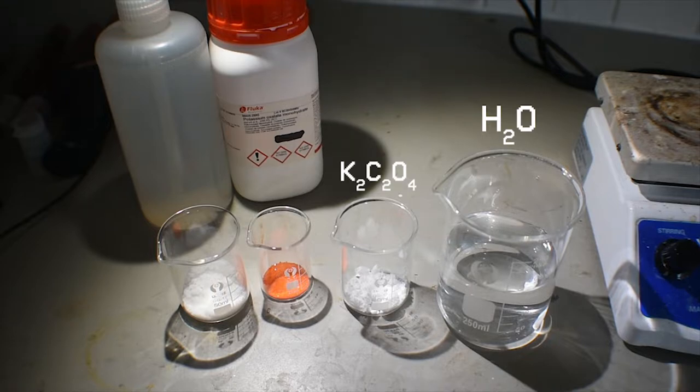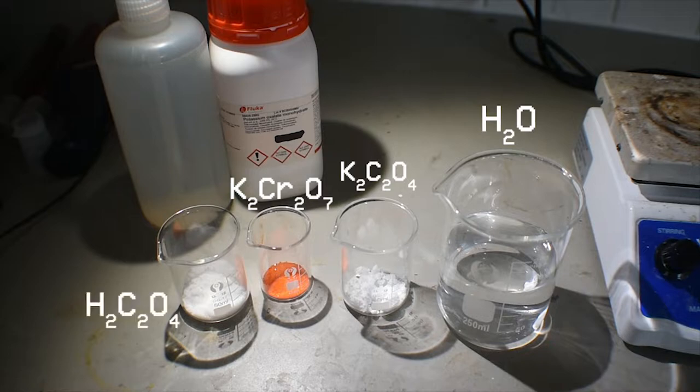We will also need 3.8 grams of potassium dichromate, you can see that, the orange solid right there, and finally 11 grams of oxalic acid dihydrate. So, let's get started.